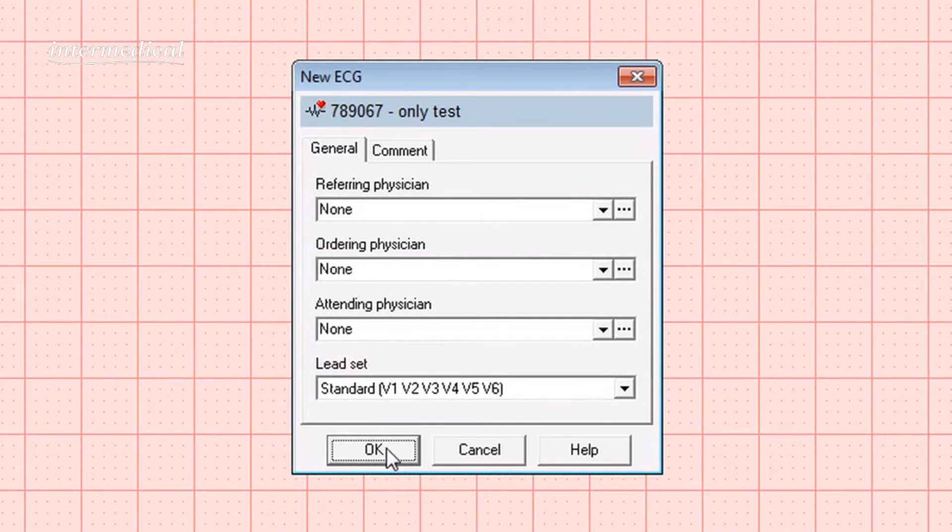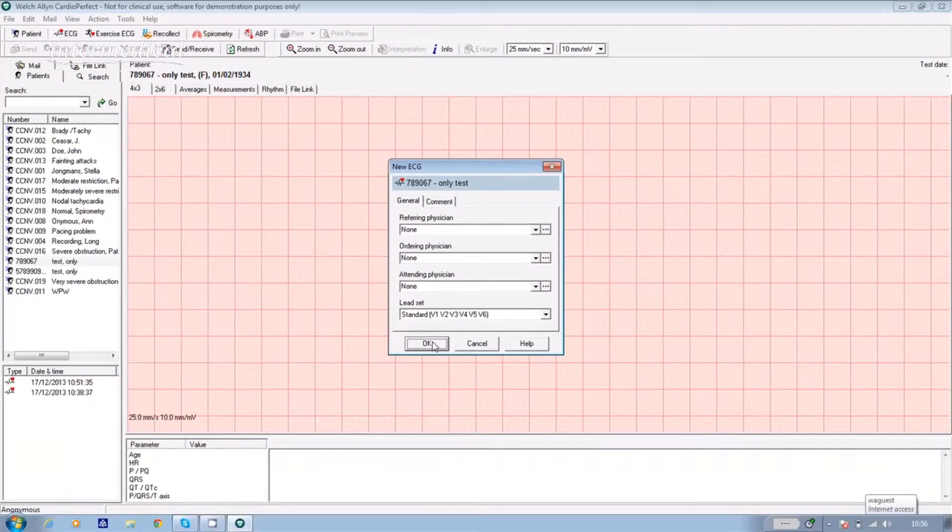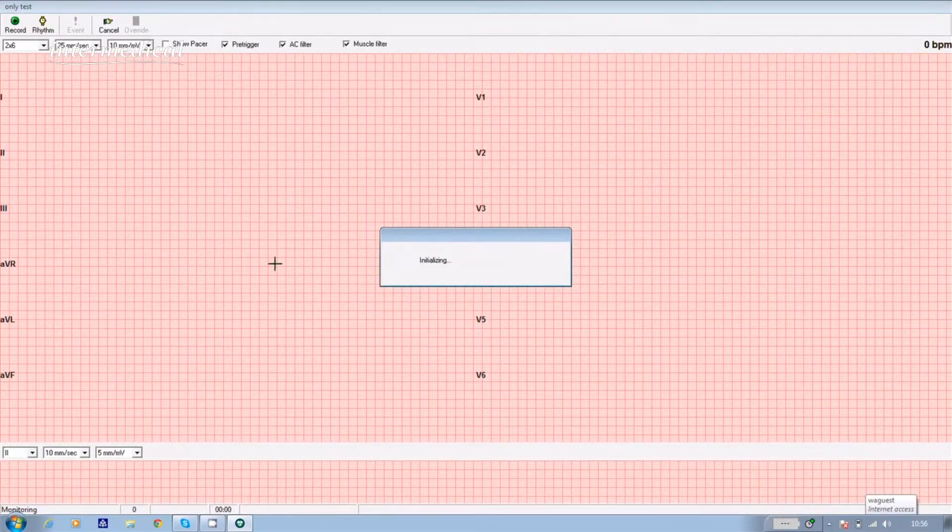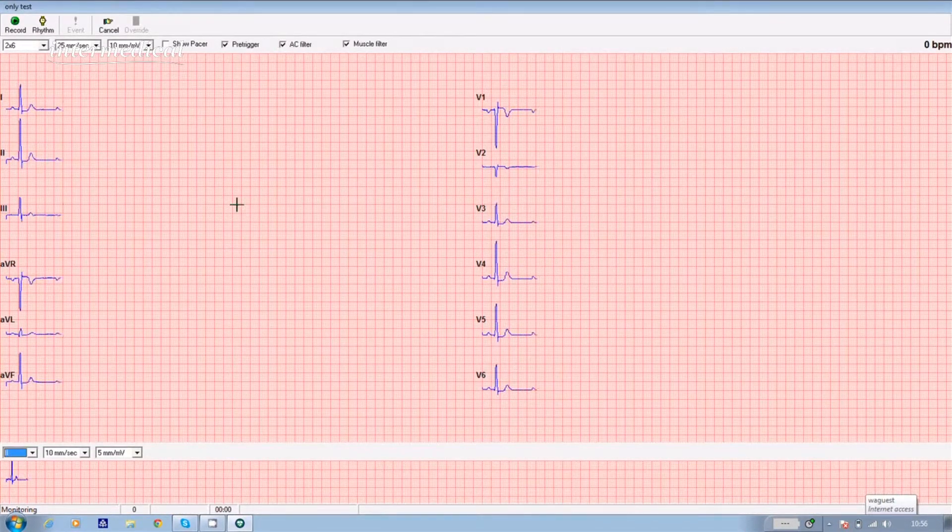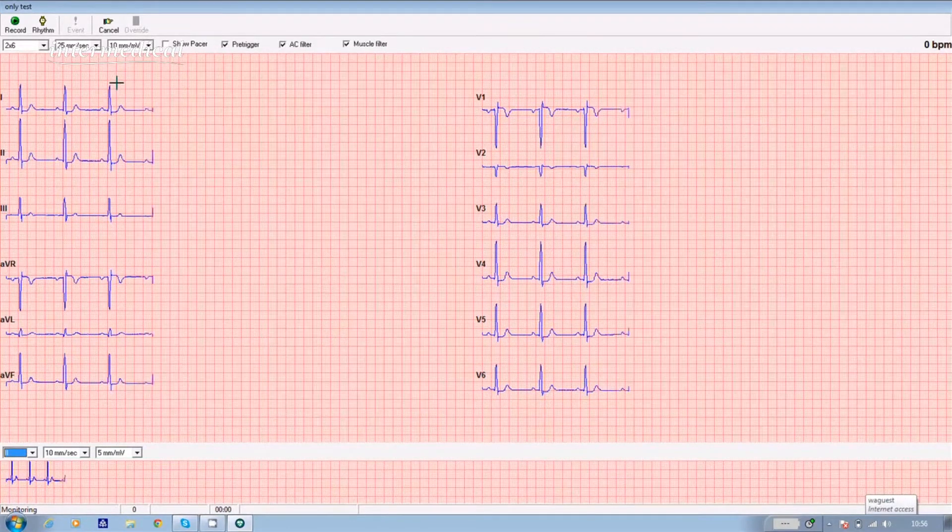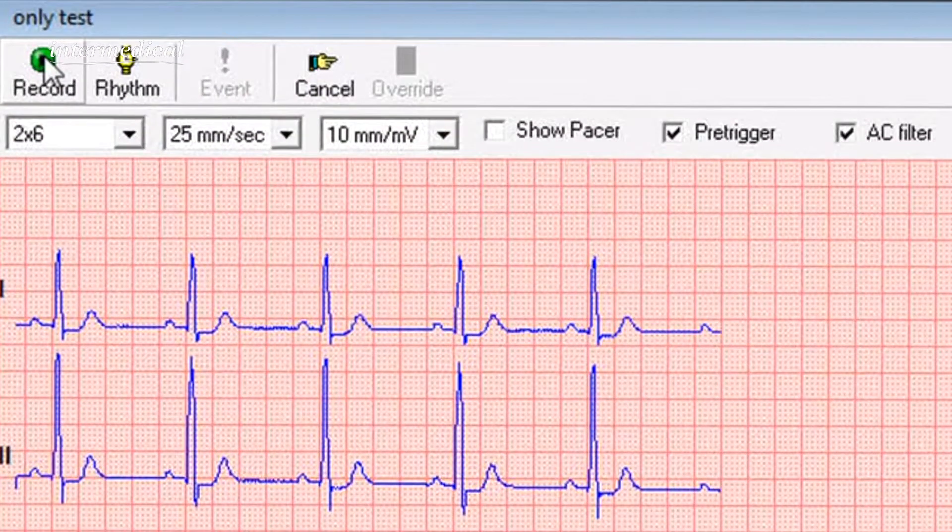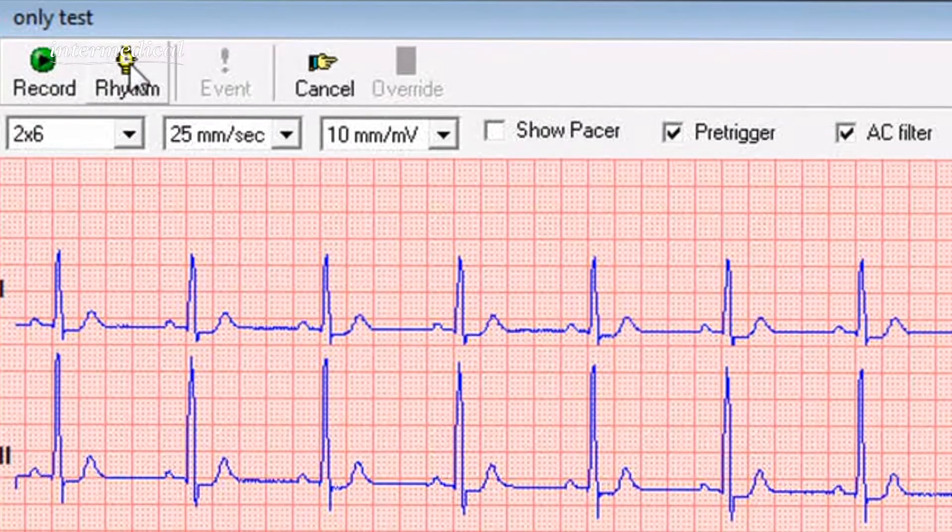Again, you get a box which says new ECG and confirm by clicking OK if the patient's details are correct. Now once again, the traces appear on the screen in real time, but to take a rhythm ECG, instead of clicking on record in the top left hand corner, click on the rhythm icon next to it.